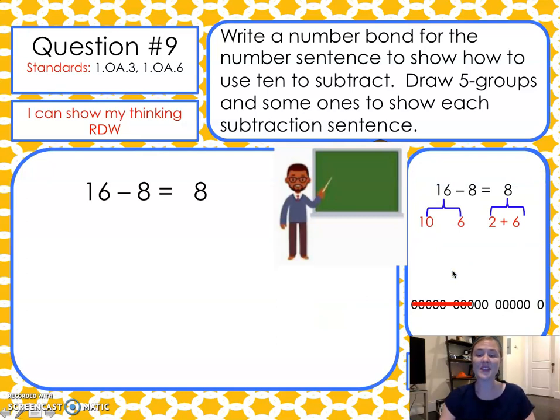I broke 16 up into 10 and 6. I took 8 from the 10, and I had 2 left over. 2 and the 6 extra ones from the 16 make 8. 2 and 6 make 8. So, 16 take away 8 equals 8.